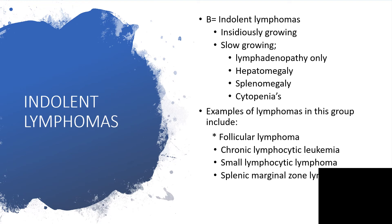Indolent lymphomas, as the name suggests, are slow-growing and insidiously growing. They present with lymphadenopathy along with hepatomegaly, splenomegaly, and cytopenia. Examples in this group include follicular lymphoma, chronic lymphocytic leukemia, small lymphocytic lymphoma, and splenic marginal zone lymphoma. People with these will not have classical symptoms of lymphoma other than organ enlargement.